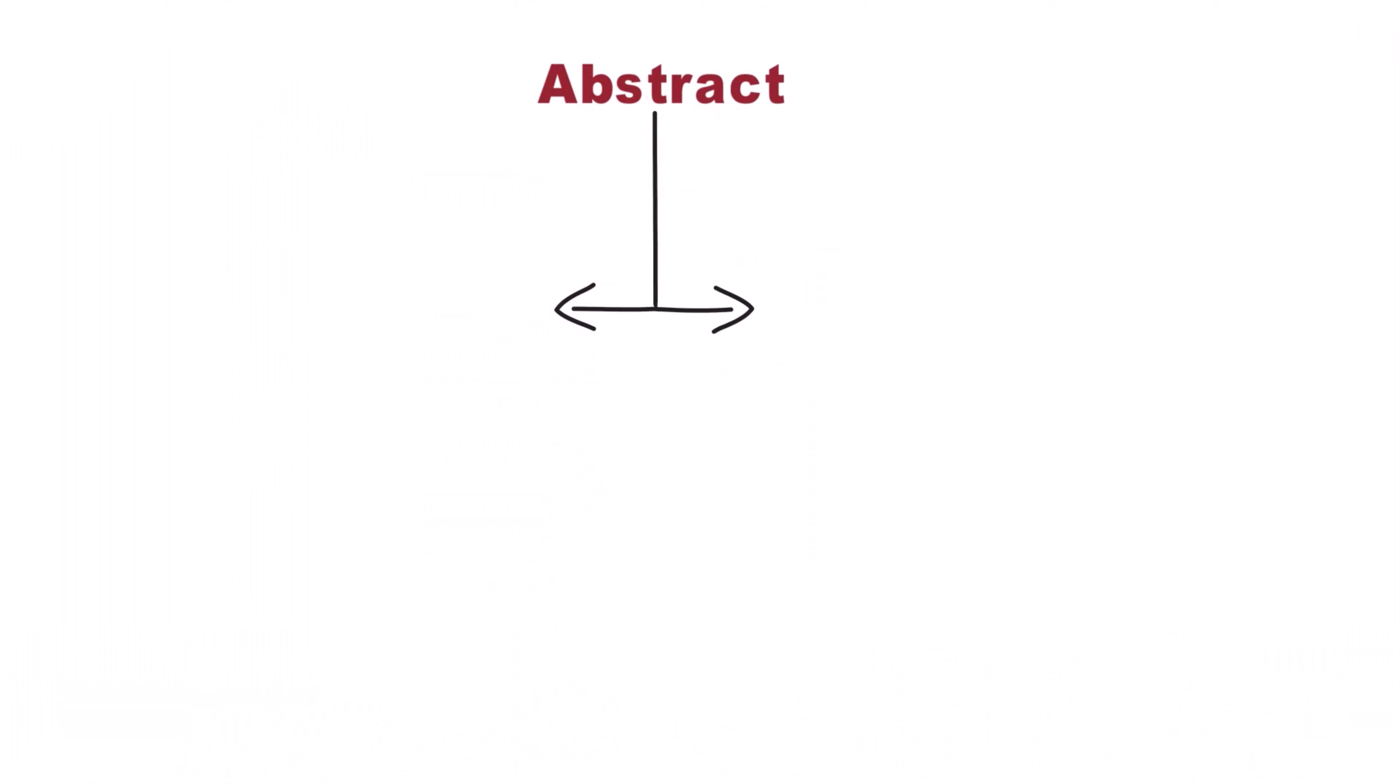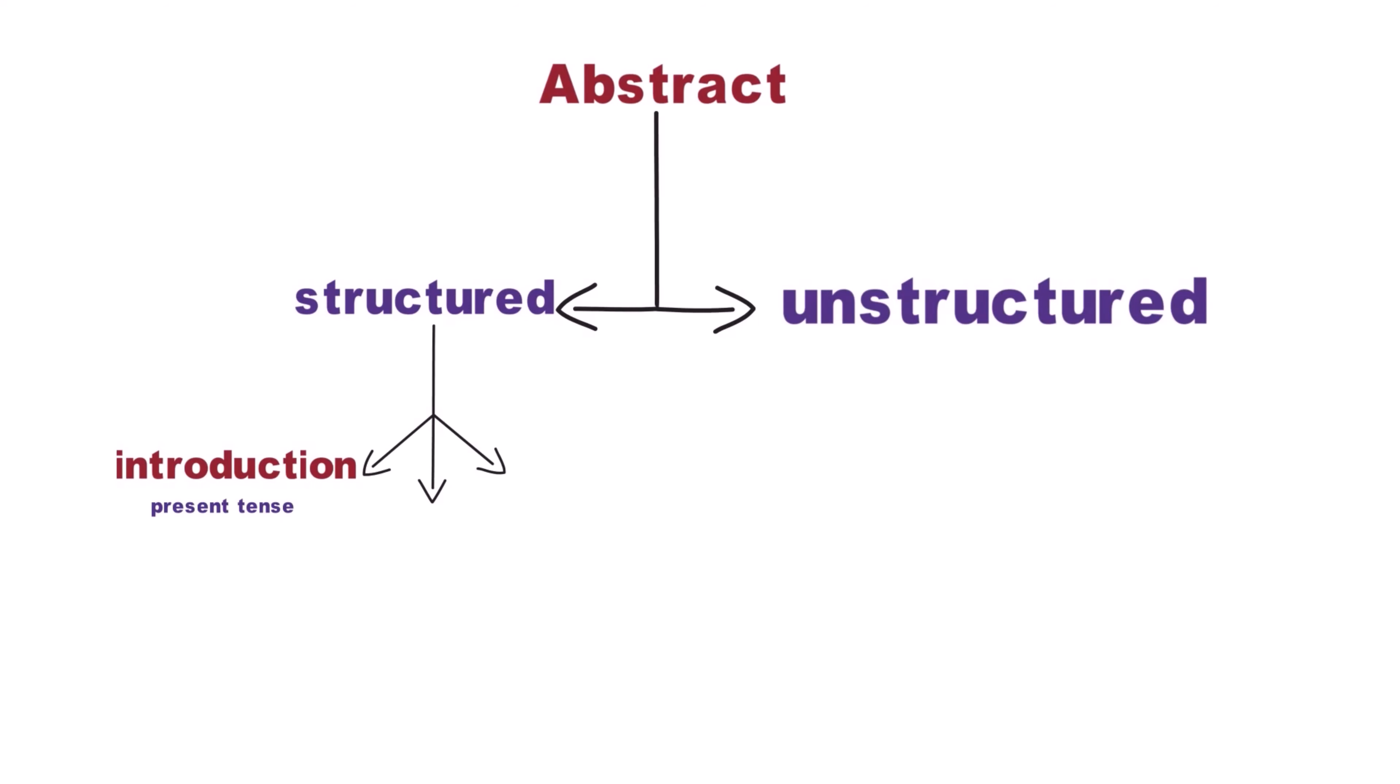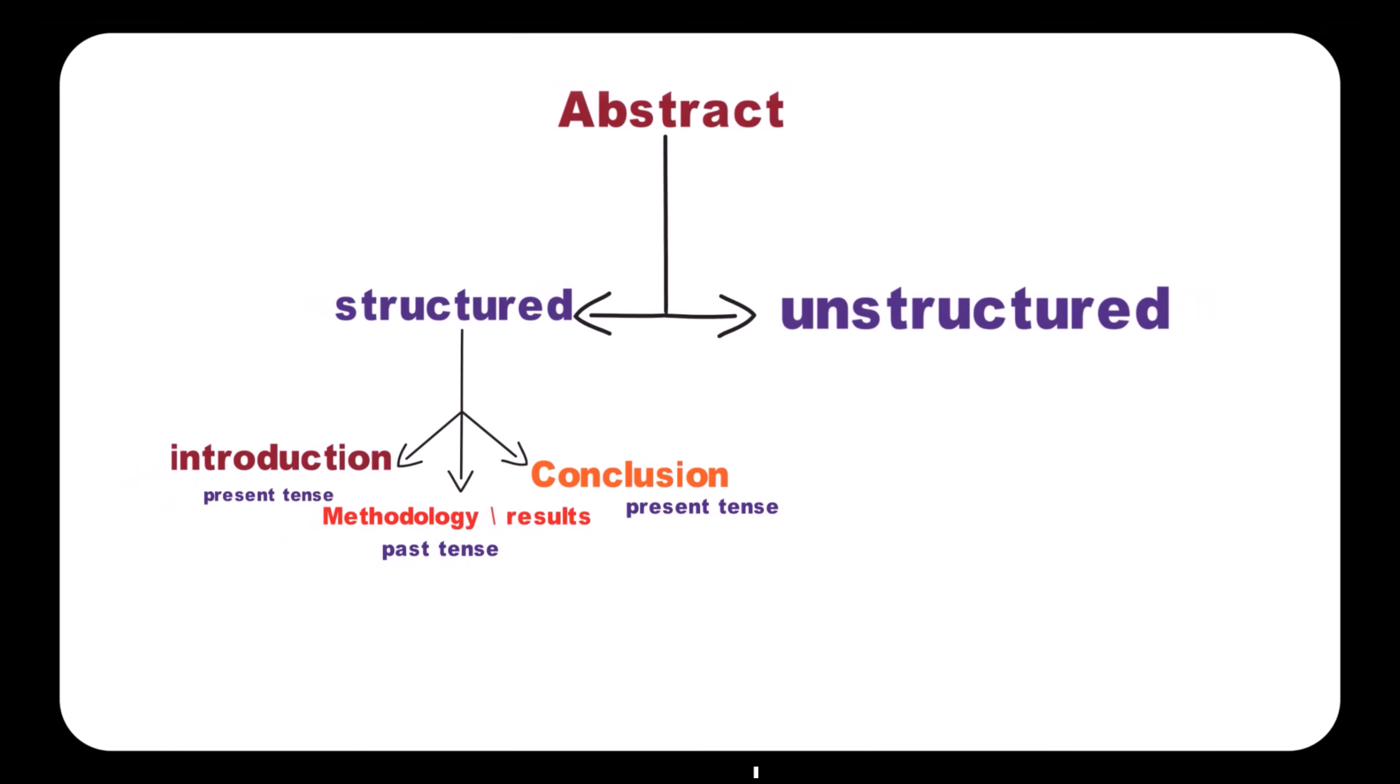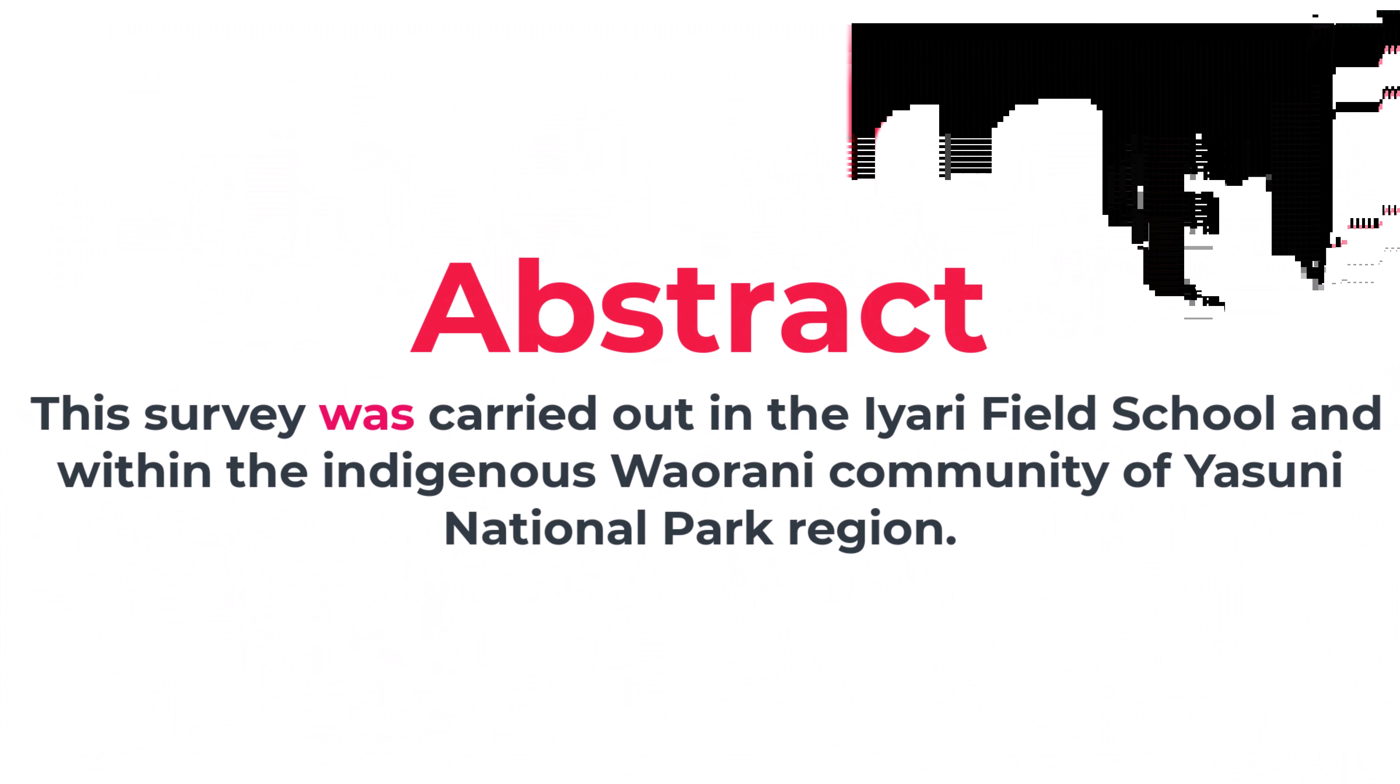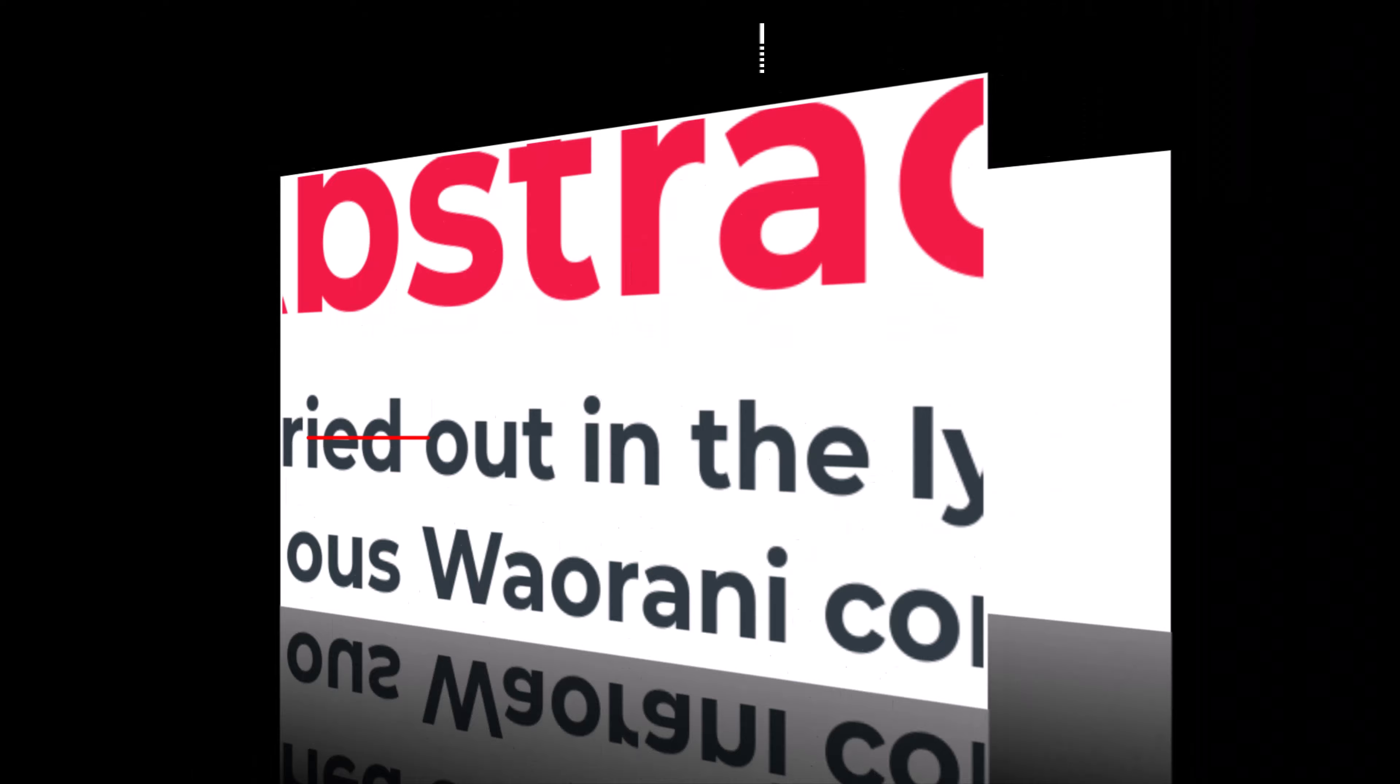It is of two types: structured and unstructured. In structured abstract, the introduction is written in present tense, methodology and results in past tense, and the conclusion in present tense. The unstructured abstract is not divided into different sections as in structured abstract, but the usage of tenses is similar. For example, this study was conducted at the Iyarina Field School and within the indigenous Wayarani community within Yasuni National Park region.